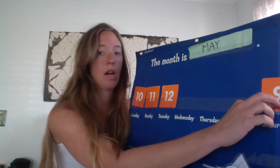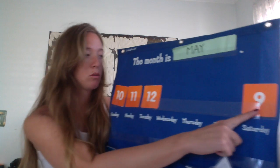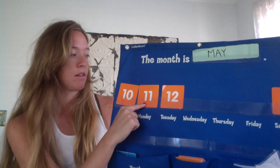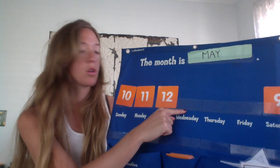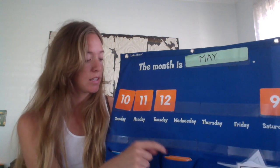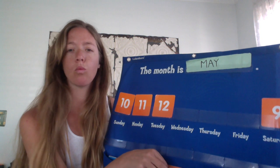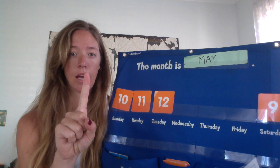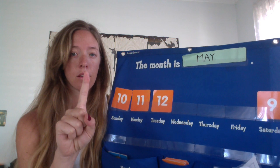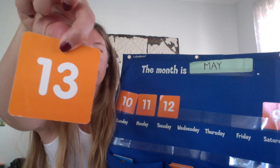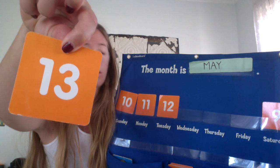We have 9, 10, 11, 12, 13. Thirteen — and what two numbers are in 13? A one and a three. Here is my 13, a one and a three.